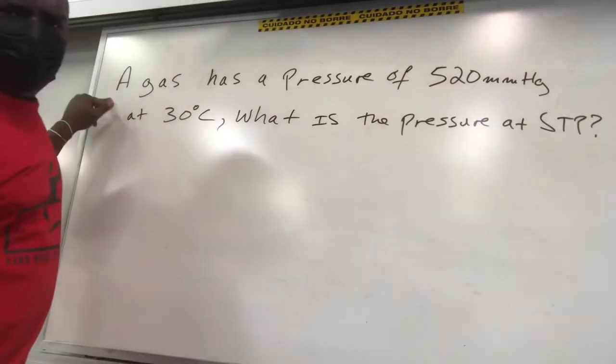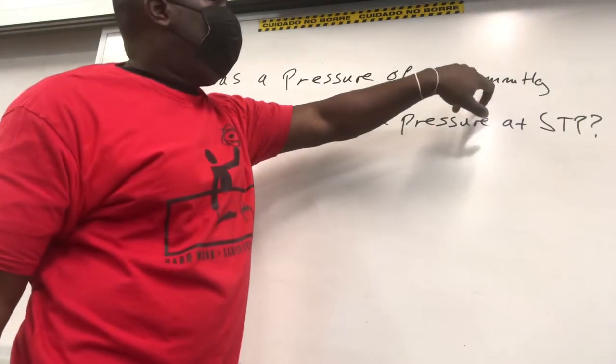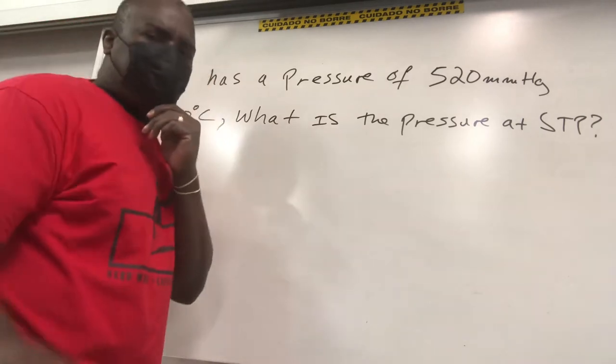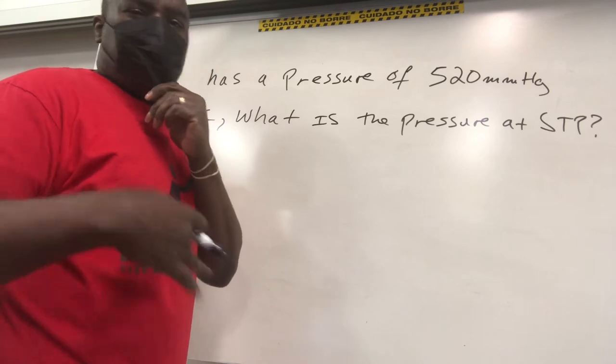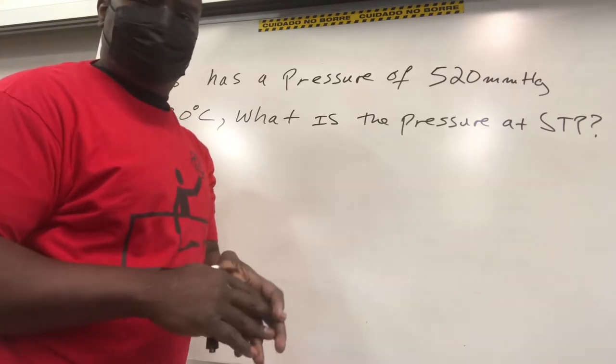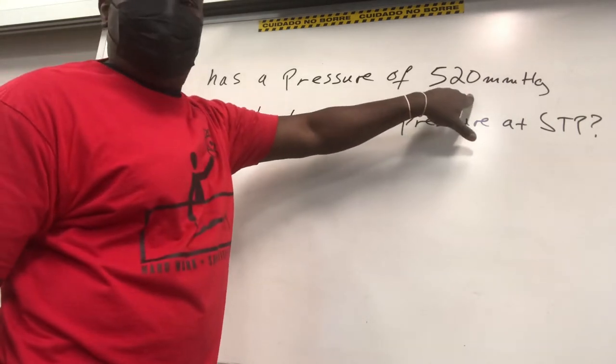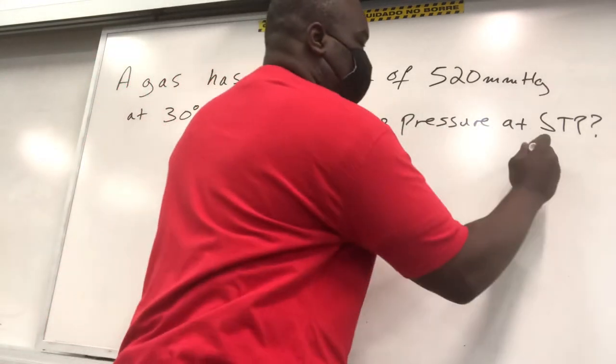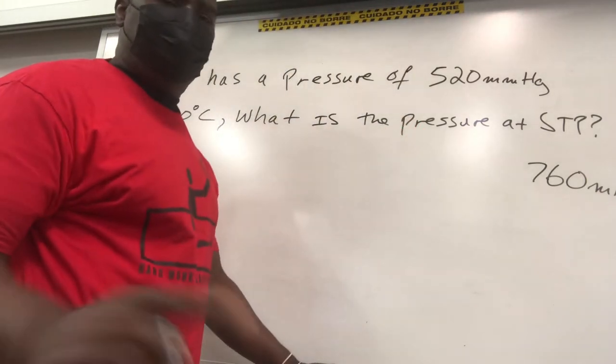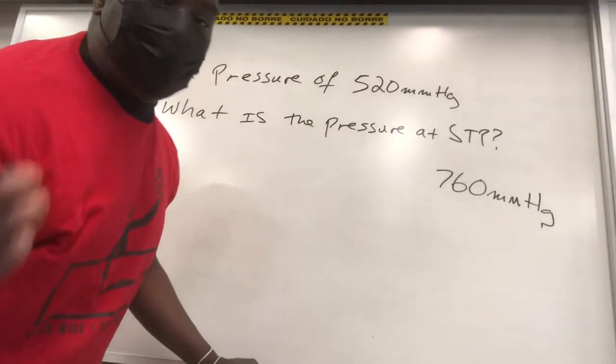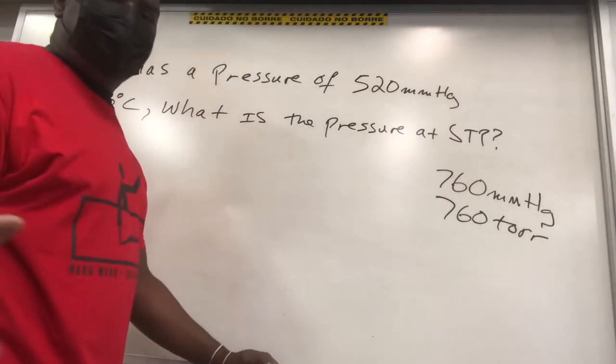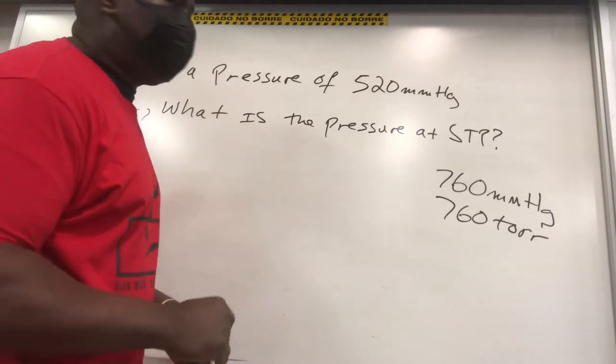Now we do this problem right here. A gas has a pressure of 520 mmHg. Now millimeters mercury mmHg is an older unit. It's sometimes on a region, sometimes not. I like my students to know it anyway. Because the one atmosphere is kPa, 101.3 kPa, that's on table A. But this mmHg is not. But make note that 760 mmHg represents standard pressure. Also 760 Torr. So just remember the number 760 for the older units of pressure, and you're good to go.